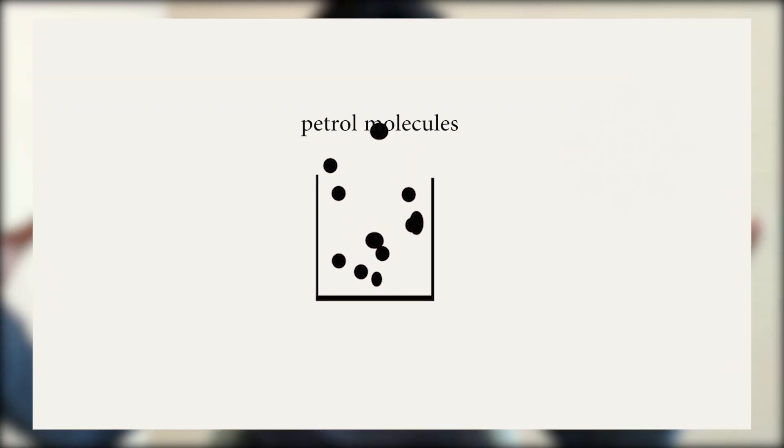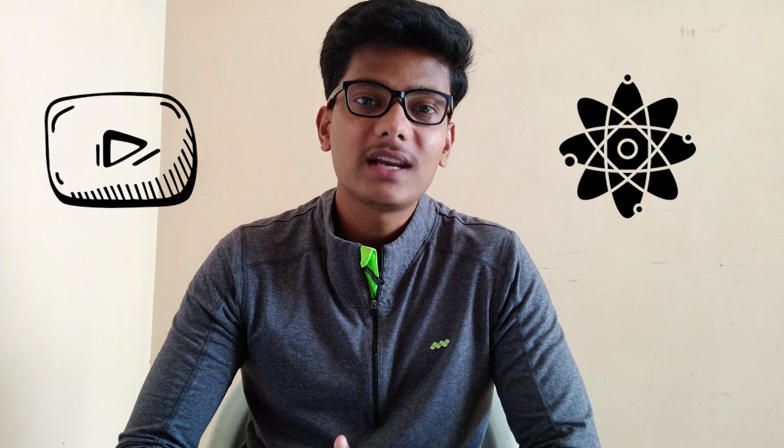Diesel molecules have stronger intermolecular forces, so one molecule and another are more tightly bound. The flash point for diesel is around 55 degrees Celsius theoretically, where the diesel liquid begins to produce vapors. In general use, we consider around 70 degrees Celsius as the effective point where diesel and air begin to mix as vapor.